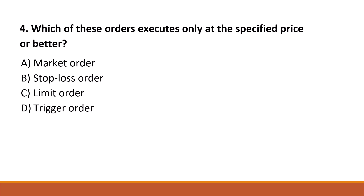Which of these orders executes only at the specified price or better? Option A: market order. Option B: stop loss order. Option C: limit order. Option D: trigger order. The correct answer is Option C, limit order.